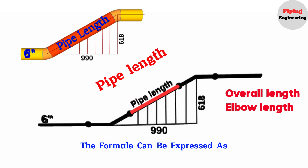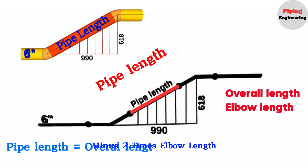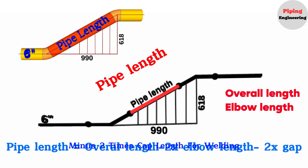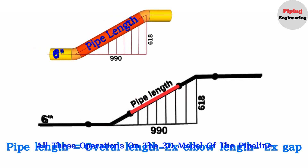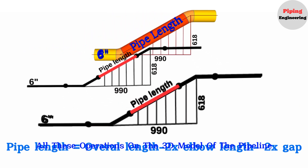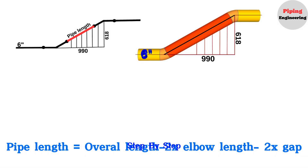The formula can be expressed as: pipe length equals overall length minus two times elbow length minus two times cap length for welding. Let's perform all these operations on the 3D model of the pipeline step-by-step.